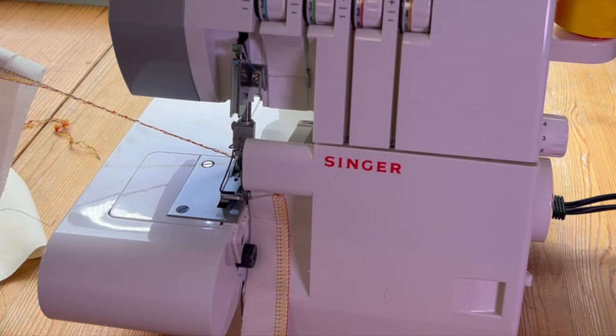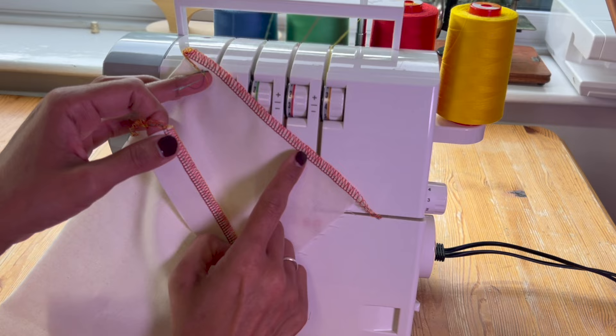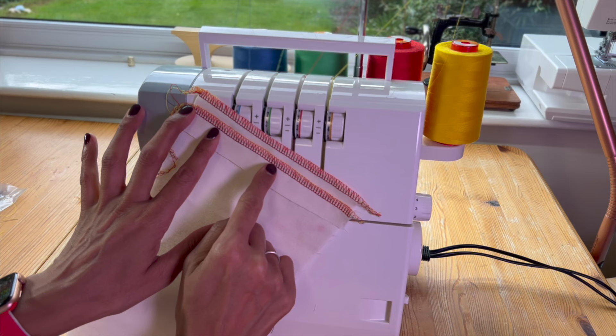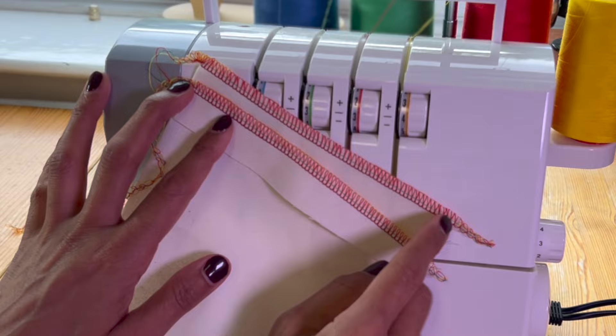So the comparison is this is a good stitch. This is a stitch without the threads being fed properly. So you can see the looper, the top loops are looping nicely. When I've not threaded the machine properly, this is what I get.